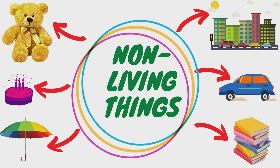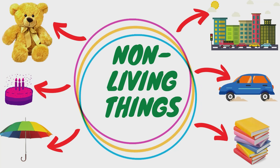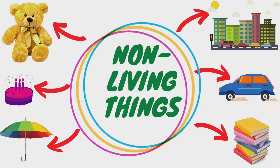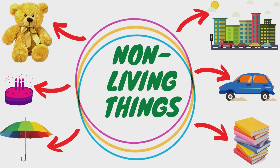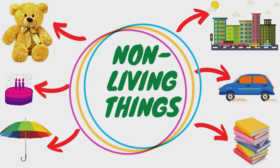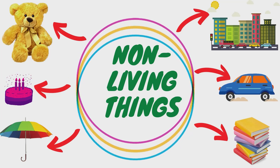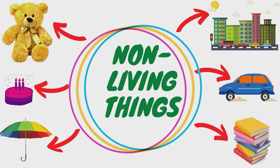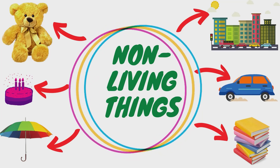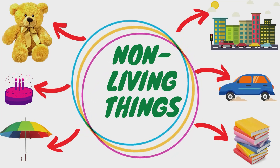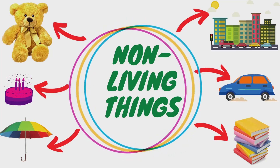On the other hand, non-living things are buildings, car, books, umbrella, cake, and a teddy bear. These are just some examples of non-living things. You can try looking around you — I am sure you can find many non-living things around you.